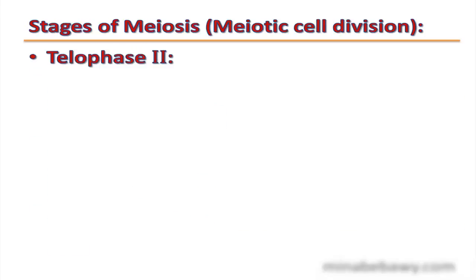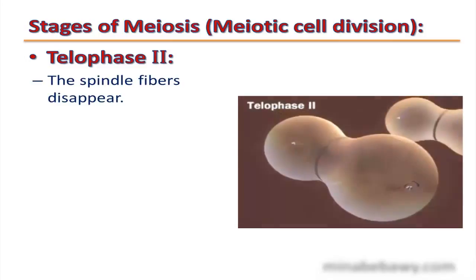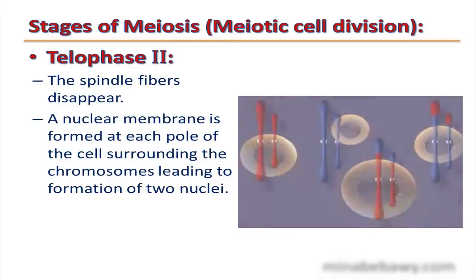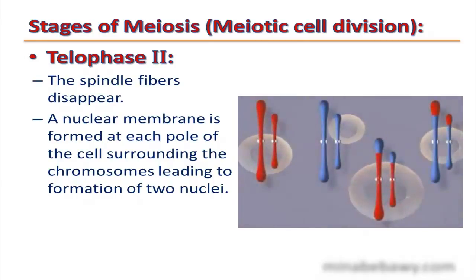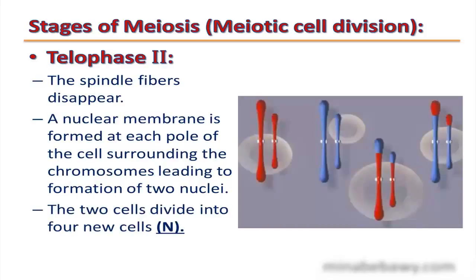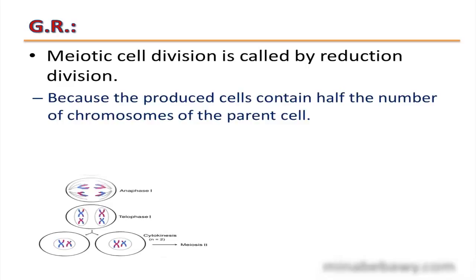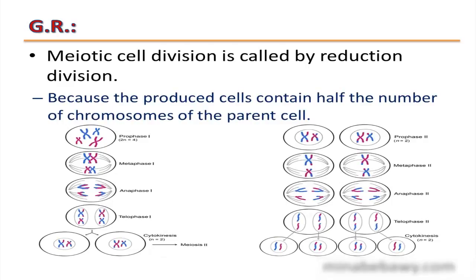The final phase is telophase 2. The spindle fibers disappear and a nuclear membrane is formed at each pole, surrounding the chromosomes and leading to the formation of two nuclei. The two cells then divide into four new cells, each containing half the number of chromosomes — haploid (N). Meiotic cell division is called reduction division because the produced cells contain half the number of chromosomes of the parent cell.